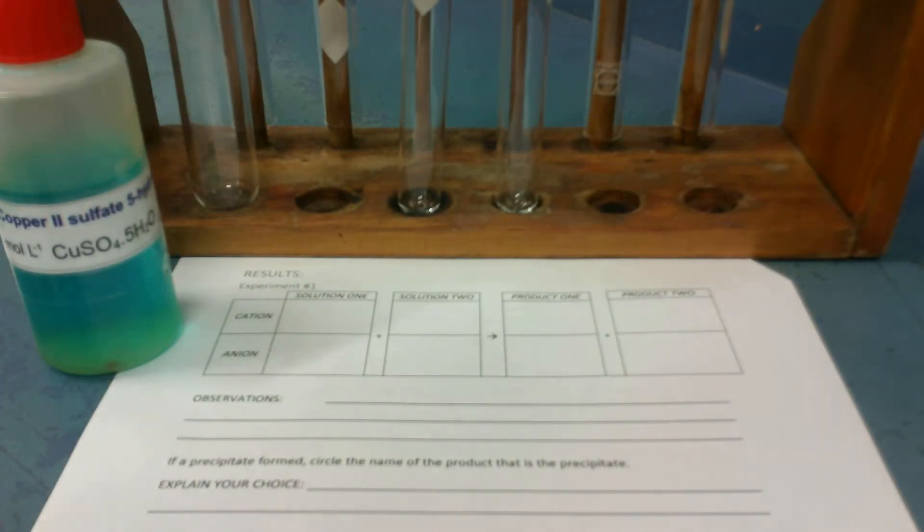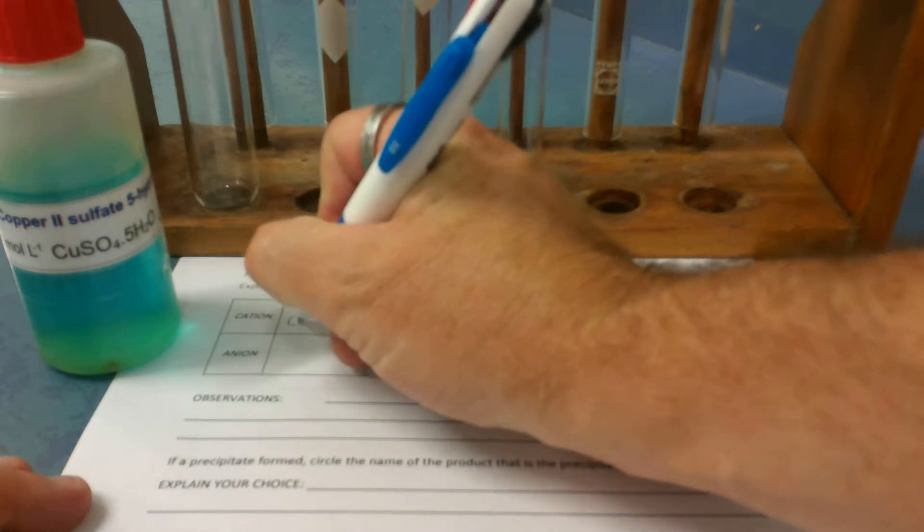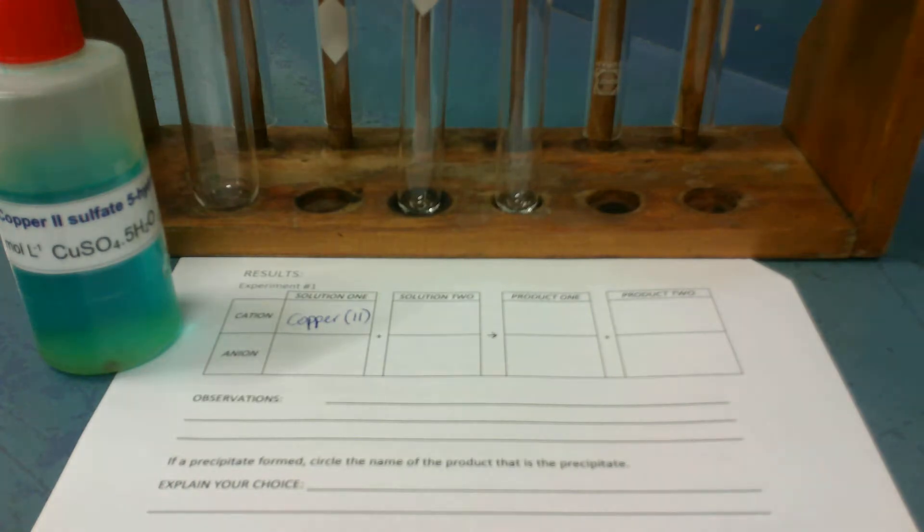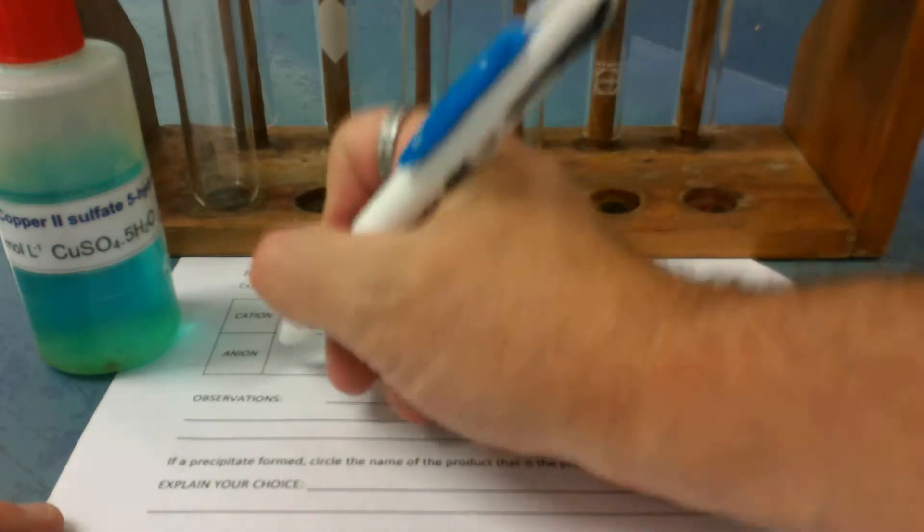The cation is copper-2, so we write that at the top. And at the bottom, the anion is the sulfate.